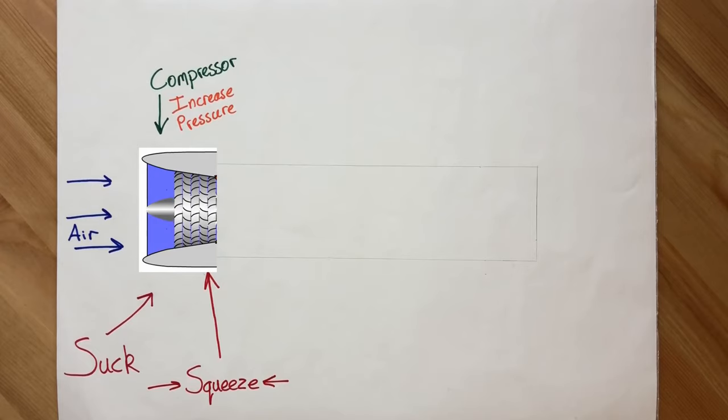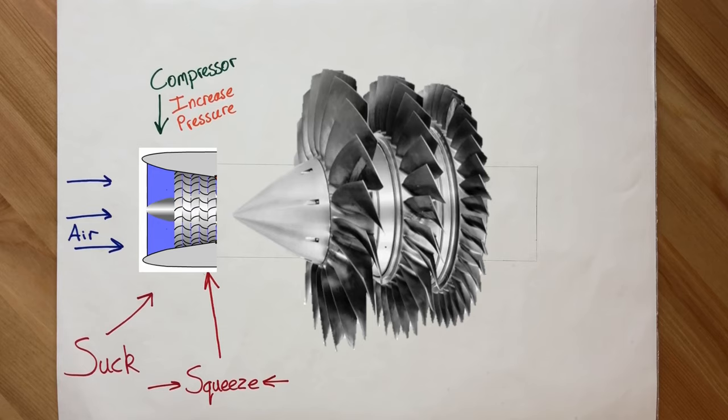To ensure the pressure is high enough, there are usually multiple compressors. Here we have three. The parts between the rotating components are stationary blades, which are used to redirect the air.